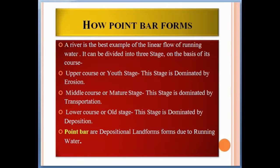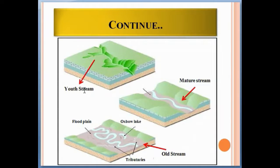A river is the best example of linear flow of running water. It can be divided into three stages based on its course: the upper course or youth stage, dominated by erosion; the middle course or mature stage, dominated by transportation; and the lower course or old stage, dominated by deposition. Point bars are depositional landforms formed in this way.